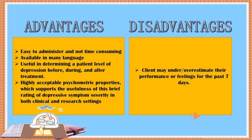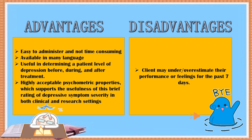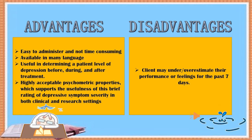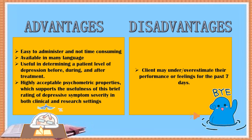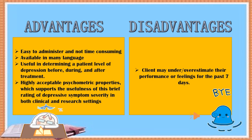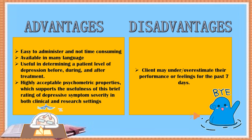The advantages of QIDS include that it is easy to administer and not time-consuming, available in many languages, and useful in determining a patient's level of depression before, during, and after treatment. It has highly acceptable psychometric properties which support its usefulness as a brief rating of depressive symptom severity in both clinical and research settings. A disadvantage is that clients may under- or over-estimate their performance or feelings for the past seven days.